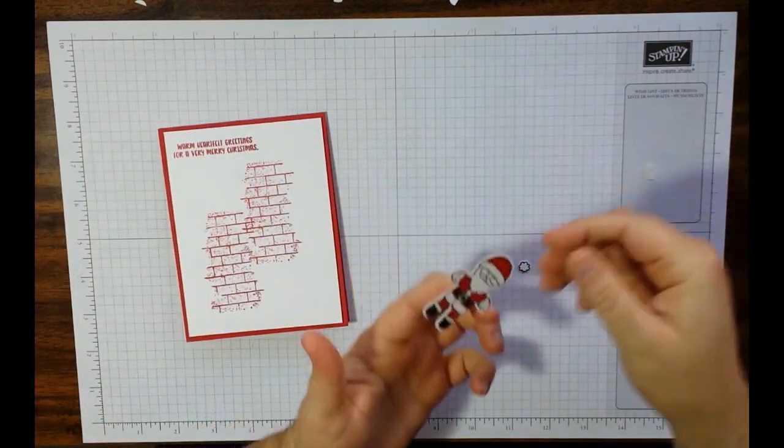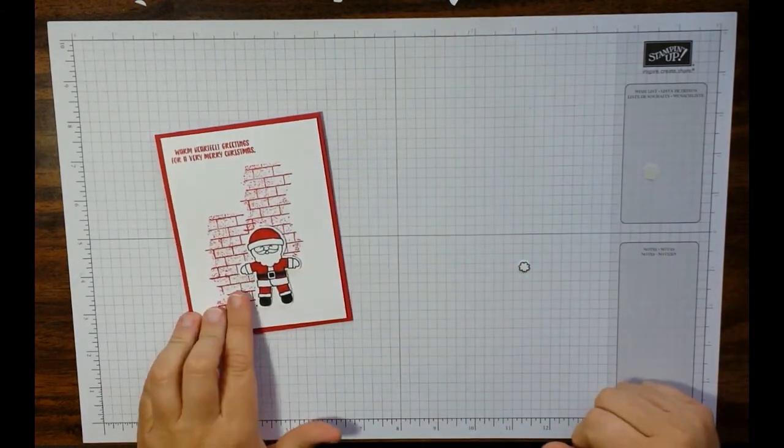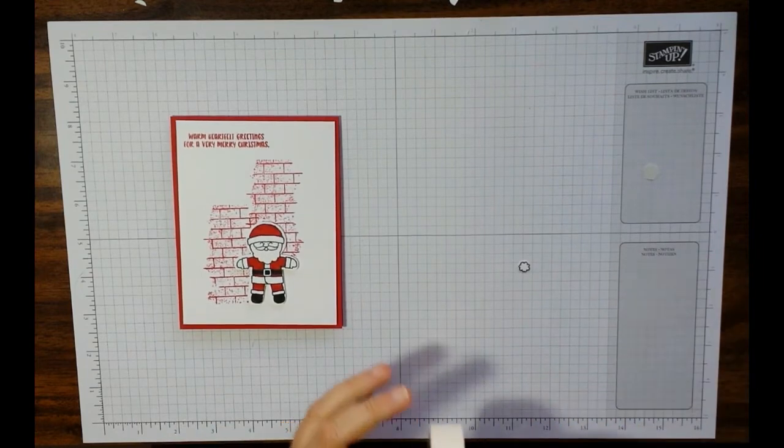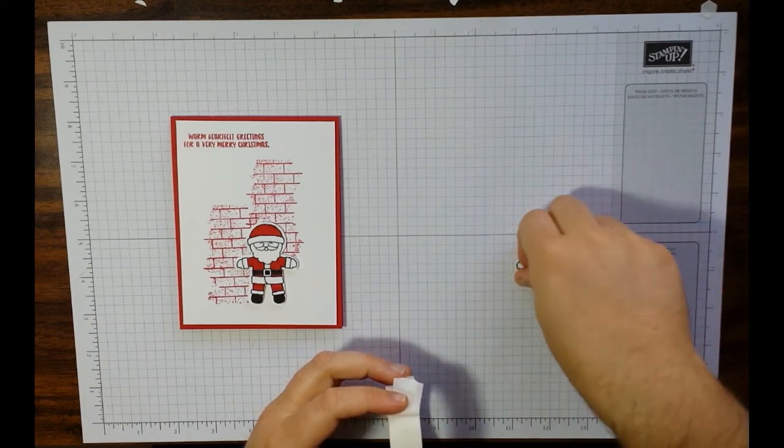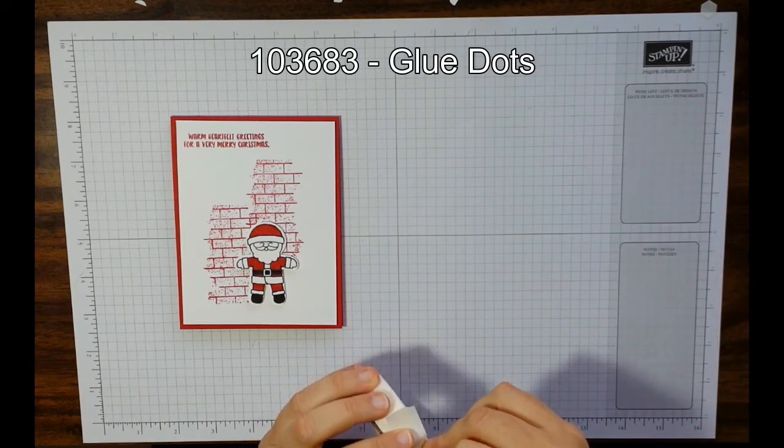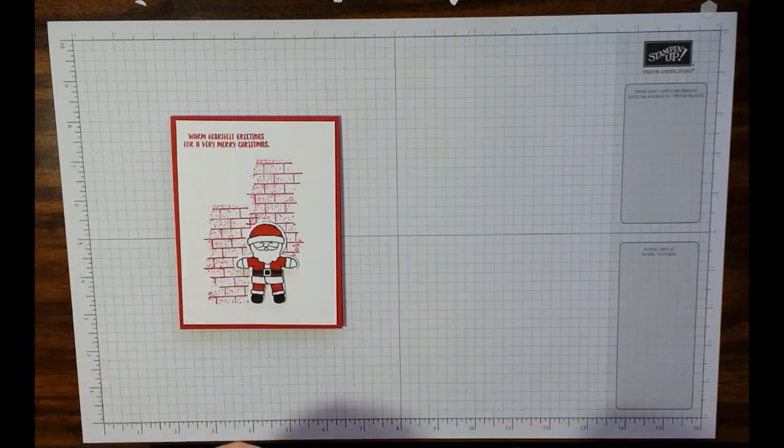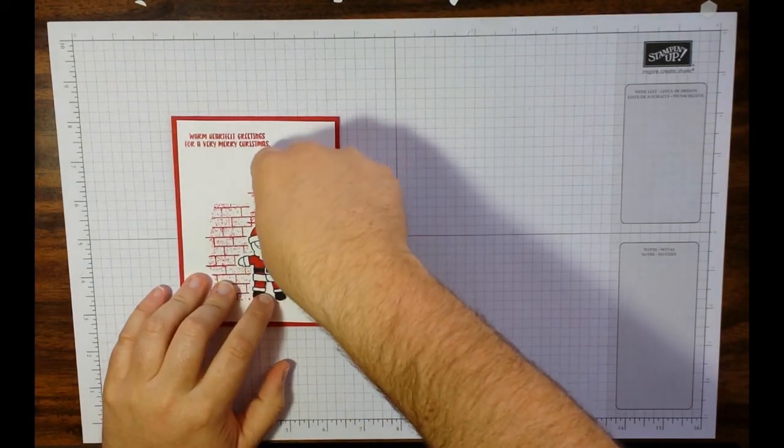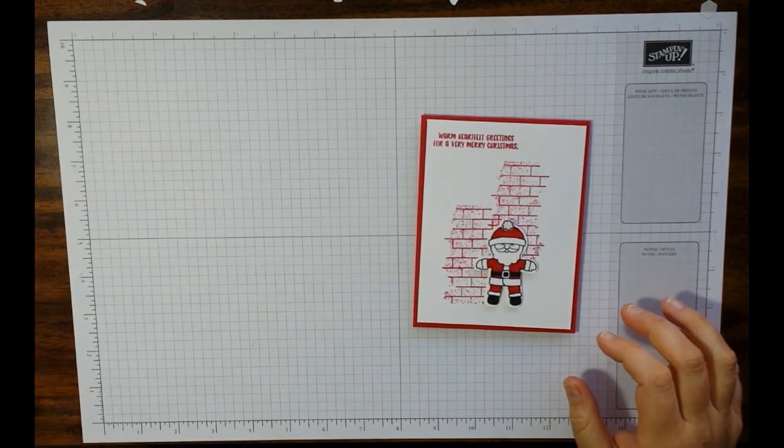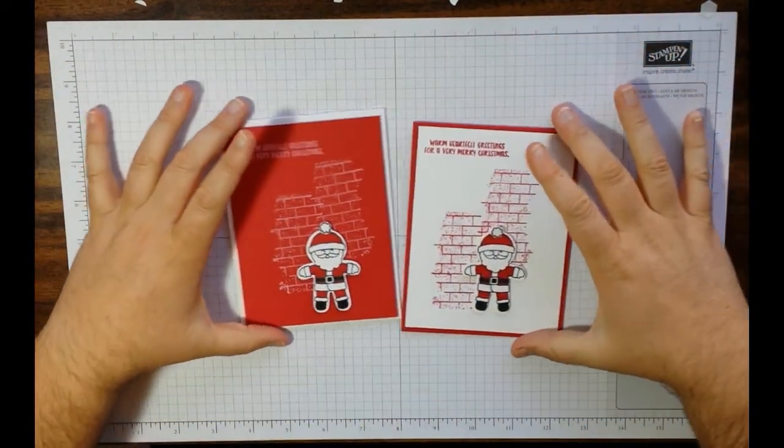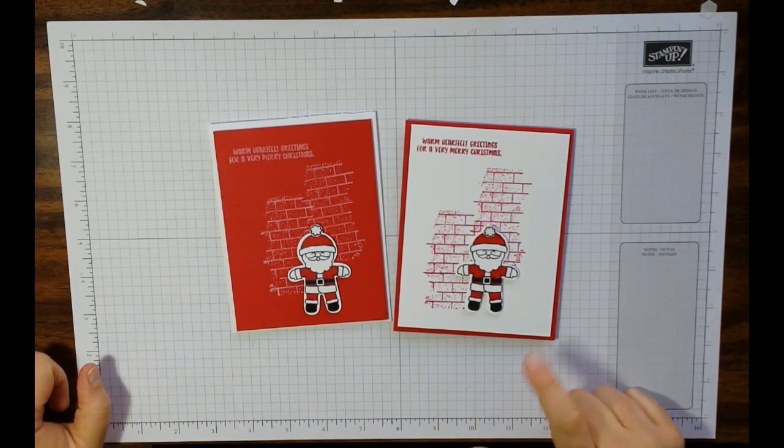Now, you can either use a dab of liquid glue or, in my case, a glue dot. I'm going to use a glue dot because it's faster for me than a dab of glue. I don't like waiting for things to dry. And then just pop his little pom pom on. And there you have your really fast, cute, fun Christmas card. You know what a really weird thing is? I think I like it in red better. Oh, that's so cute.